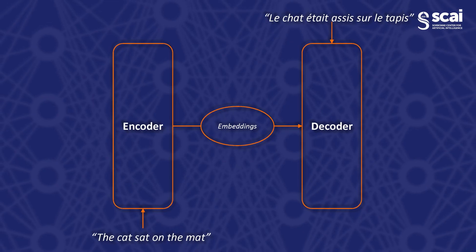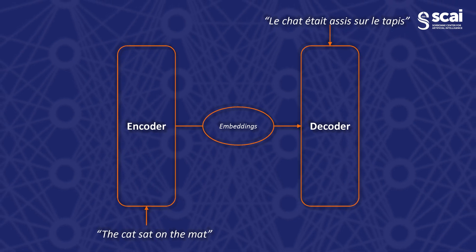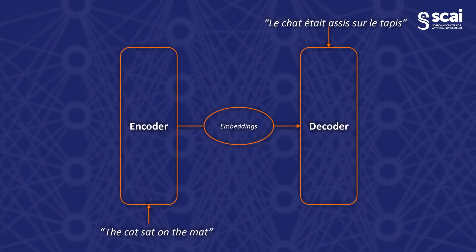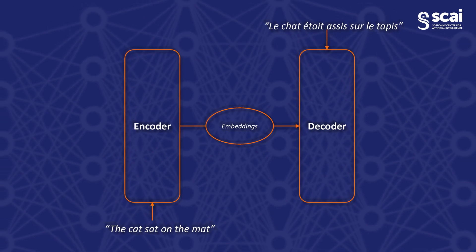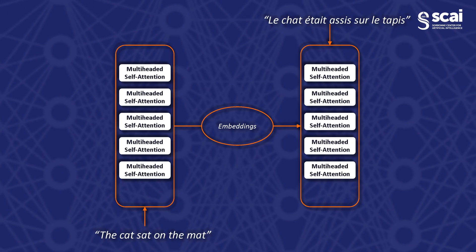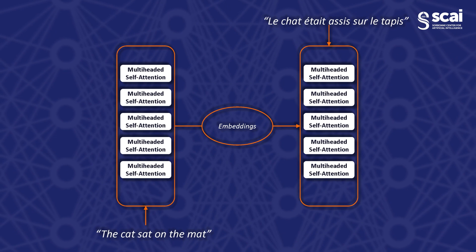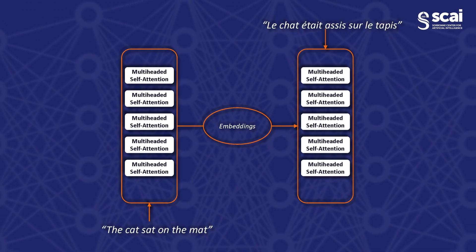The transformer architecture is composed of an encoder and a decoder. The encoder takes in the input sequence and transforms it into embeddings, or numeric representations of that input sequence. The decoder takes that embedding and creates the output sequence. The encoder and the decoder are made up of a number of multi-headed self-attention modules that are stacked on top of each other.